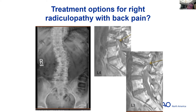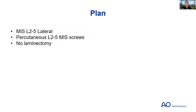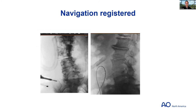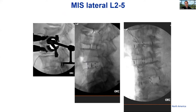Roger asks about standalone lateral fusion with or without a lateral plate. Dean: he's never been a fan of standalone because he likes to have a tension band — pedicle screw fixation posteriorly. He came from the era when standalone cages failed. Standalone lateral fusion rates are lower per multiple publications, and lateral cages are biomechanically less stable than pedicle screws. He no longer uses lateral plates given how easy it is now to do single-stage lateral with percutaneous posterior screws.